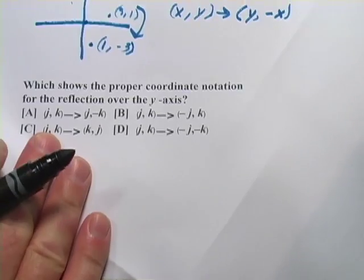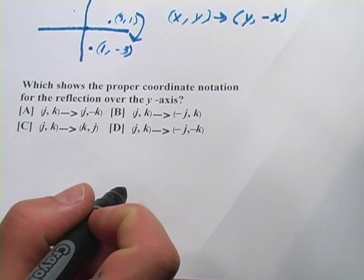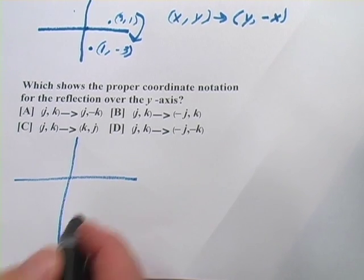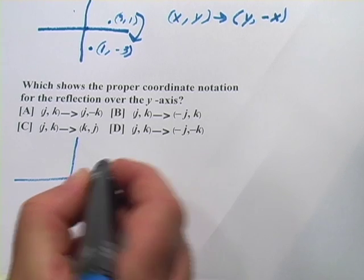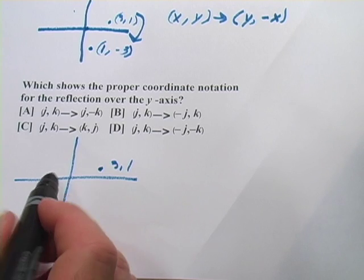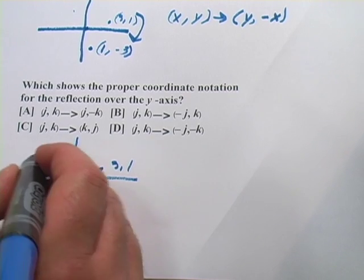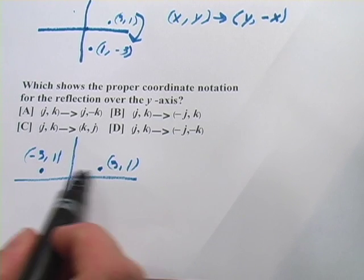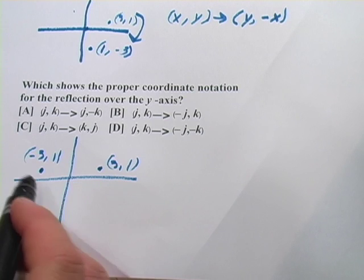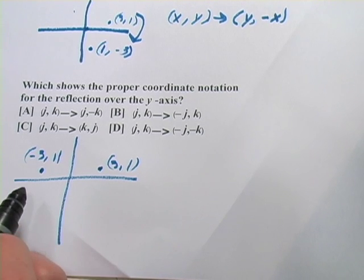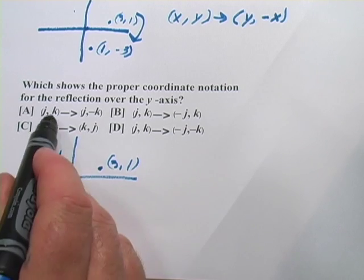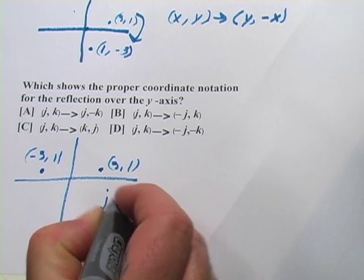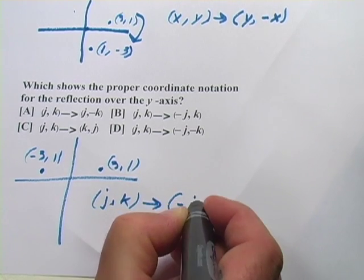Let's look at one more. This one says: which shows the proper coordinate notation for the reflection over the y-axis? The y-axis is here. Let's say I have my same point (3, 1). If we're going to reflect it, we're going to get negative 3, 1. So what happened? The x and the y stayed in their positions, but we just made the x-coordinate negative. And here they're using j and k instead of x and y, so j, k goes to negative j, k.